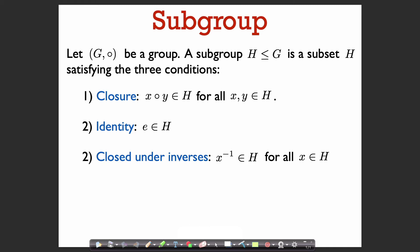Since H is a subset of a group, you don't have to verify all the conditions again — for example, the operation is already associative on H. To check that something is a subgroup, you only need to check three things: closure (for all x, y in H, x ∘ y is again in H), that the identity element is in H, and that H is closed under taking inverses.